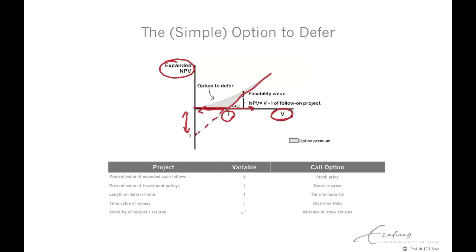This 45-degree line is the value of commitment — if you always make the investment. And this truncated line is the value of the option, when you only make the investment if it's favorable. This is the value at maturity of the option, so the value at t=1. We now want to know what the value of this truncated payoff is today — that is the option value, reflected in the figure by this curve. We need an option valuation formula to determine this value.